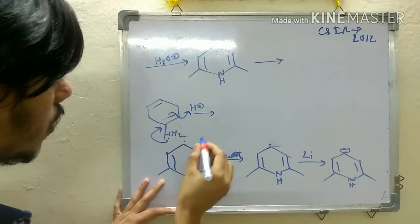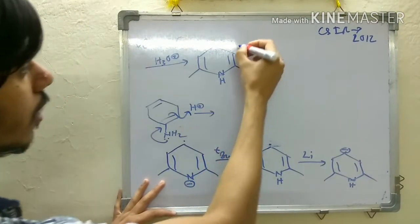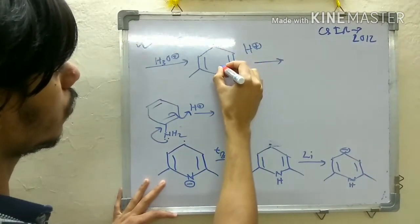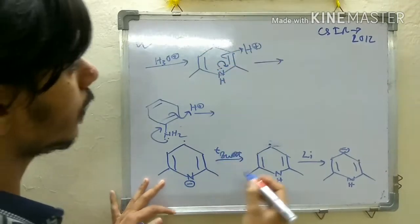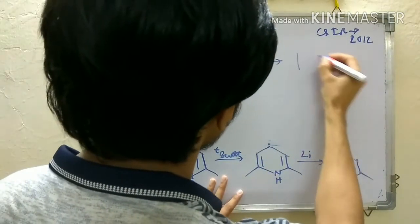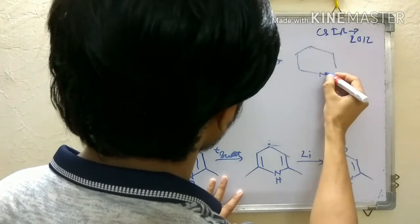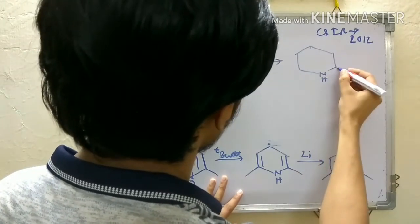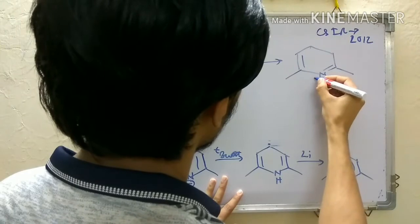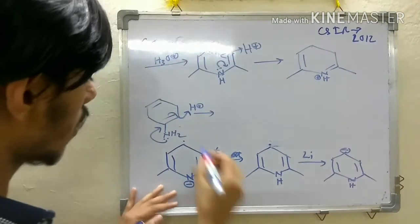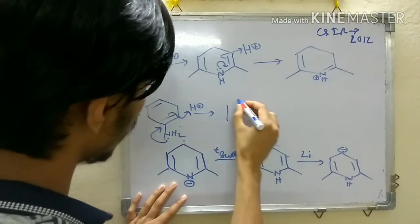But in acidic solution, it can be protonated like this to give you this intermediate. The same situation is here - you have a proton, so it can be protonated like this to give a positive charge.